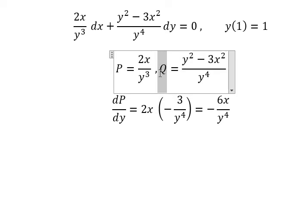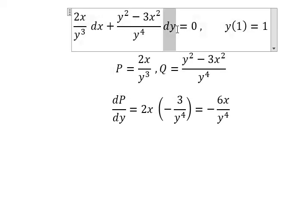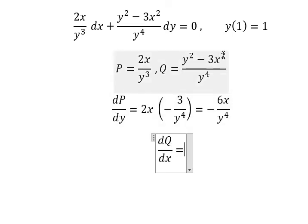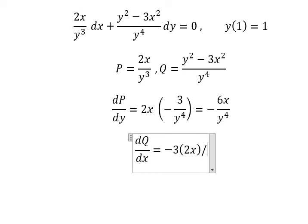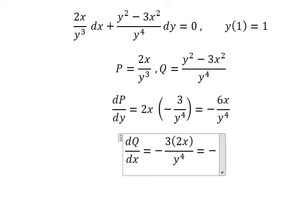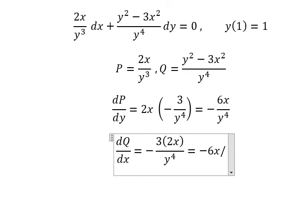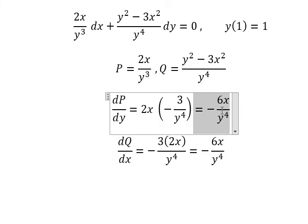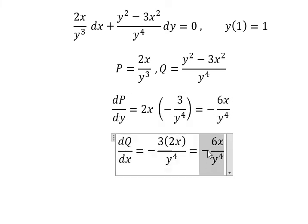Next, we have Q, and we can see there is a y here, so that means we need to do the first derivative of Q with respect to x. We get negative 6x over y to the power of 4, and we see that this is the same. So that means this equation is exact.